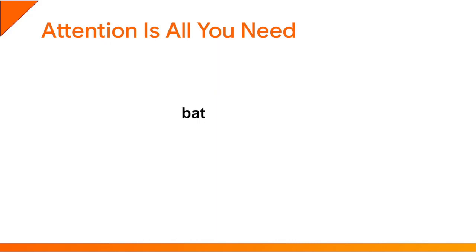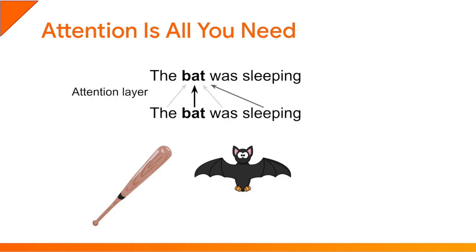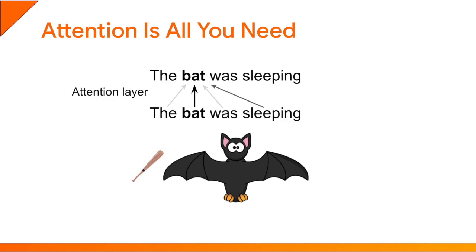Consider the word 'bat' — it could mean a baseball bat or the animal. But suppose the full sentence is 'the bat was sleeping.' When this sentence goes through the multi-head attention layer, the word 'bat' gets compared to every single word in the sentence, including itself — this is called self-attention. The word 'bat' is perfectly similar to itself, the words 'the' and 'was' are pretty different, but 'sleeping' is slightly similar in the sense that both bat and sleeping can be animal-related. So when the attention layer computes the weighted sum of word representations, the result is close to the original representation of 'bat' but pushed in the animal-related direction. The multi-head attention layer does this in parallel for all words in the sentence, transforming all word representations based on context.